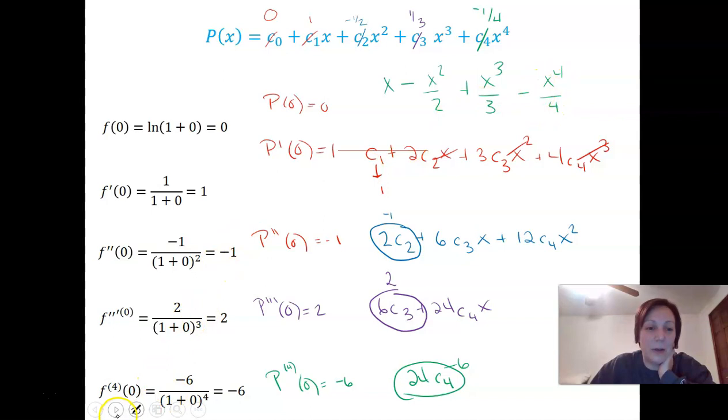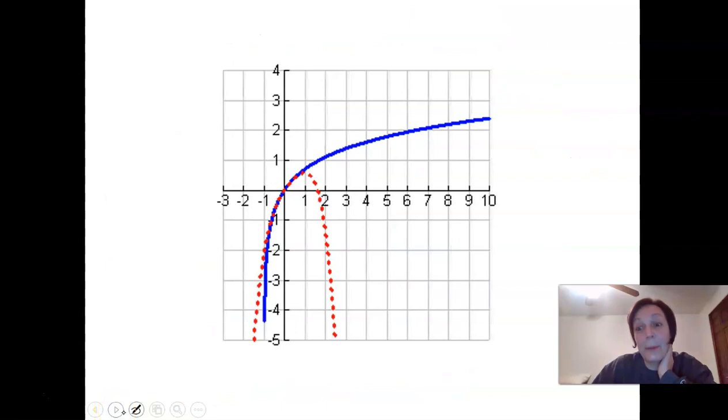So look what I have. I have a polynomial. p of x has to be x minus x squared over 2 plus x cubed over 3 minus x to the fourth over 4. And dang it if that isn't what we got when we integrated earlier. Now, I don't have to tell you that that matches beautifully, but only around 0. As we move away from 0, it doesn't look so hot.